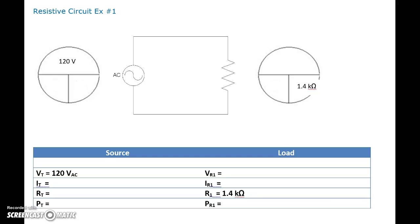Alright guys, let's start off with something nice and simple with resistive circuit number one. We've got 120 volts as our source here, and you'll see that these are going to be our mirror image because all we have is an AC source and one resistor.